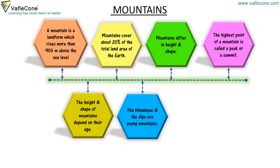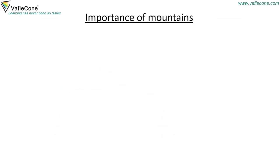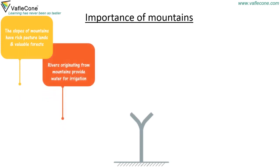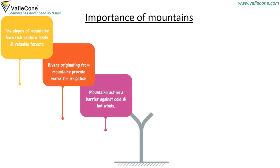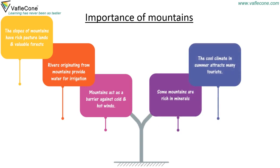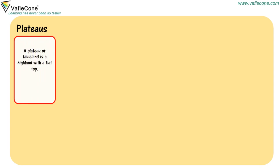The Himalayas and the Alps are young mountains. The Aravallis and the Appalachians are very old mountains. The slopes of mountains have rich pasture lands and valuable forests. Rivers originating from mountains provide water for irrigation. Mountains act as a barrier against cold and hot winds. Some mountains are rich in minerals. The cool climate in summer attracts many tourists. Mountain rocks are widely used as building materials.